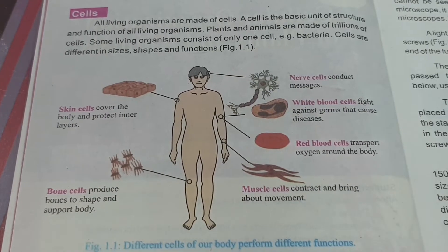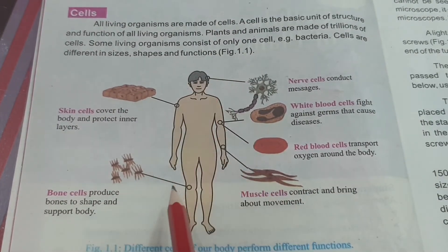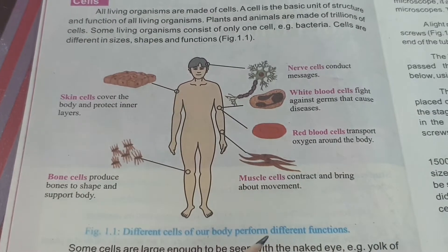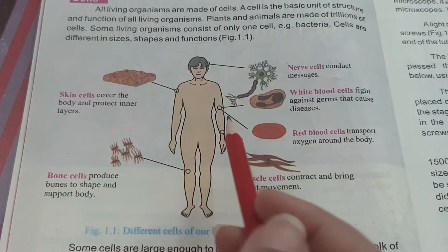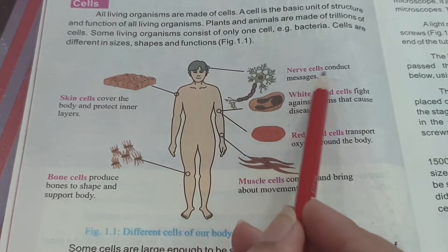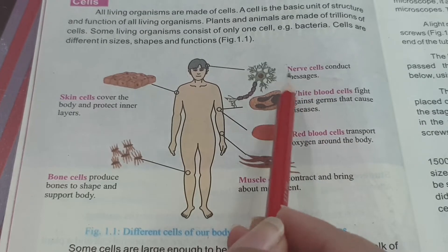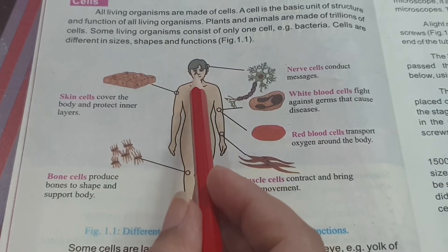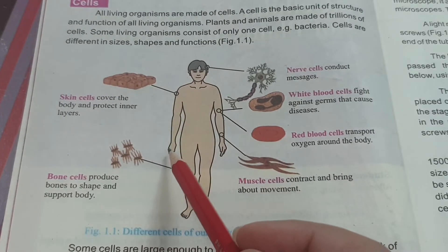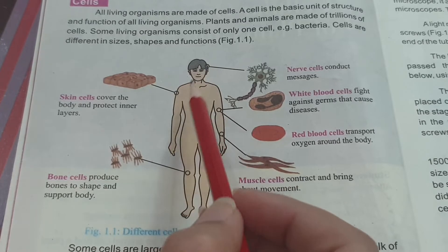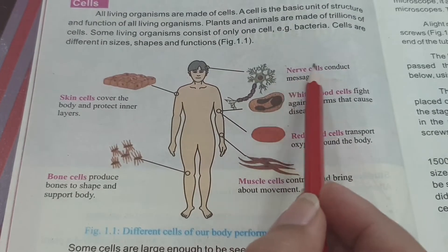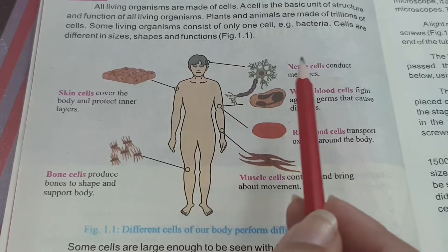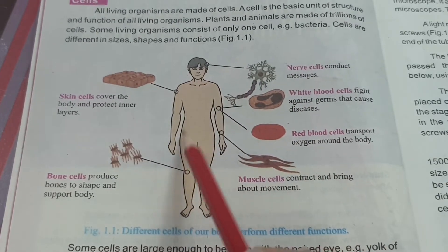In this diagram we have a human body showing how many types of cells we have. There are more types, but we are considering six examples. Starting from the head, we have nerve cells. Nerve cells conduct messages — they take messages from body parts to the brain and bring back the brain's reply to the body parts. That is the main function of nerve cells.